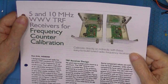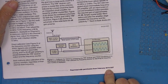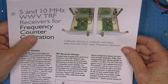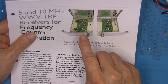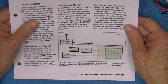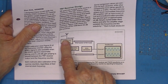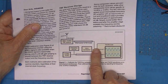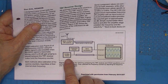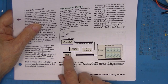I printed out the QST article from February 2018 that shows a 10 MHz and 5 MHz receiver. The intention of the article is to use a TRF receiver connected to a 50 ohm termination on channel 1 input to the oscilloscope, while you have a frequency source on channel 2.